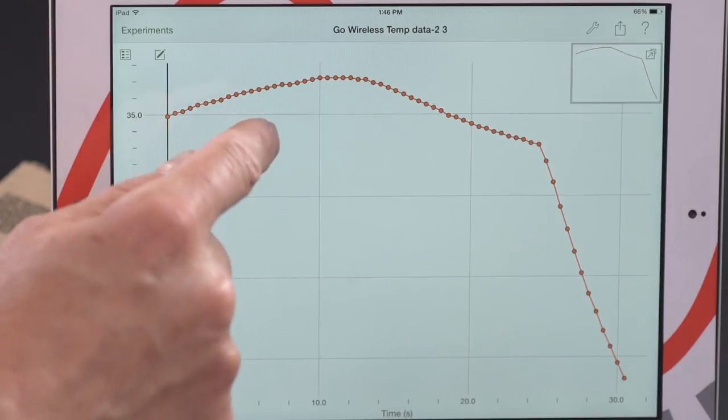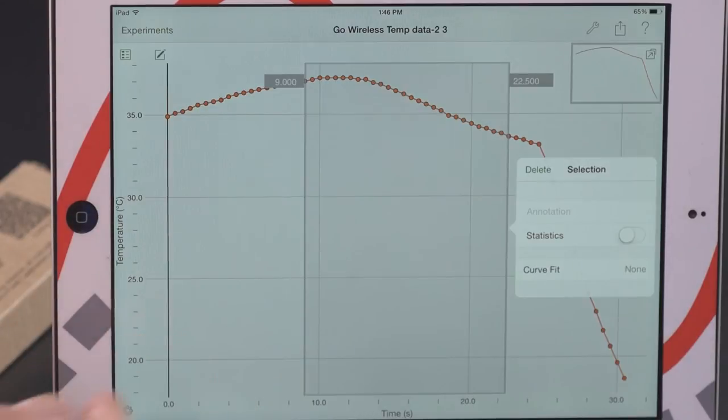Here we see that same graph. We can select regions, we can do curve fits, statistics, and any other further analysis we'd like to do. For more information on graphical analysis or the Go Wireless temp, please visit our website.